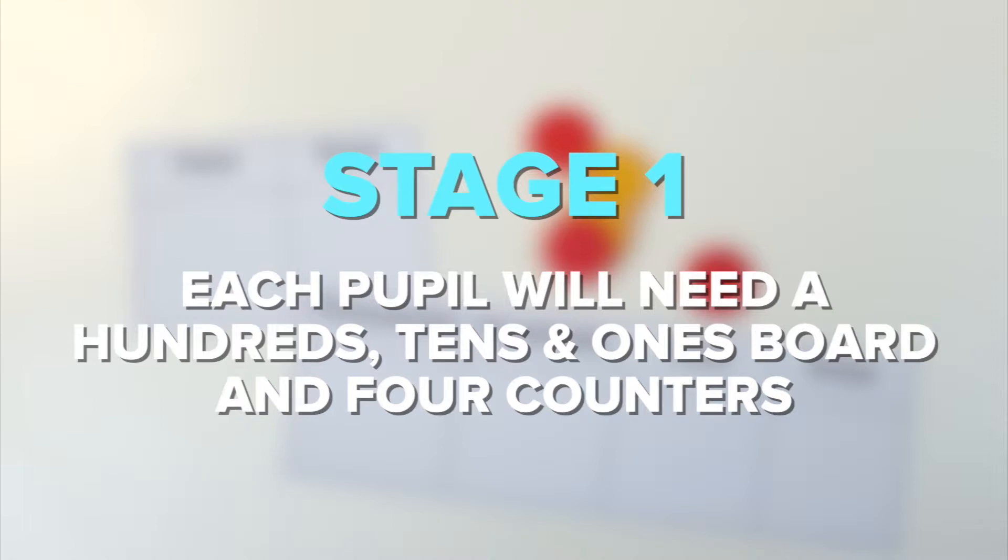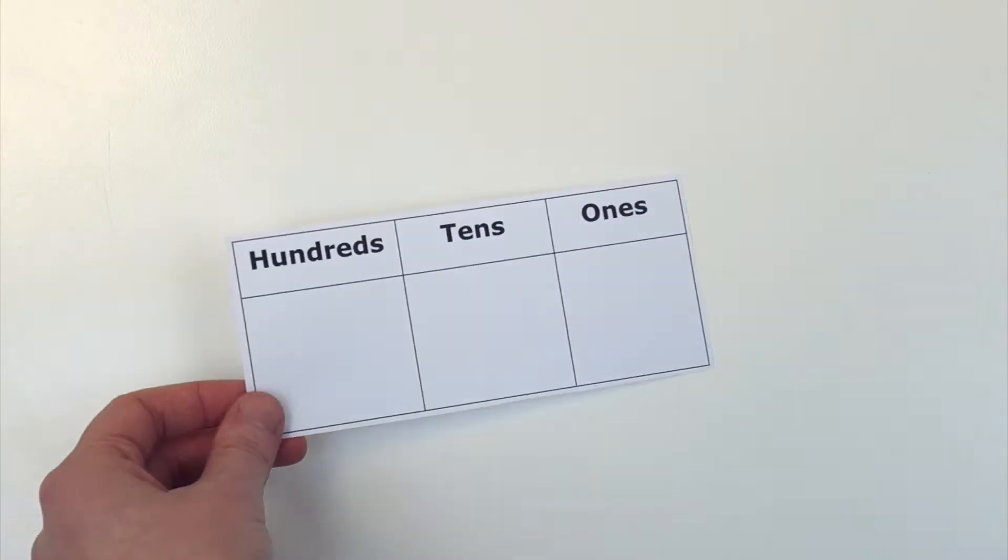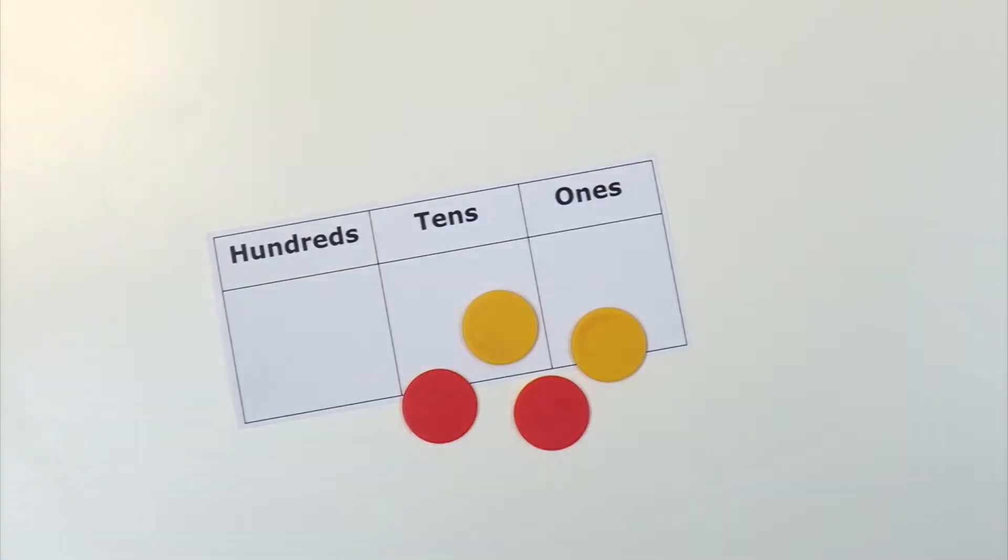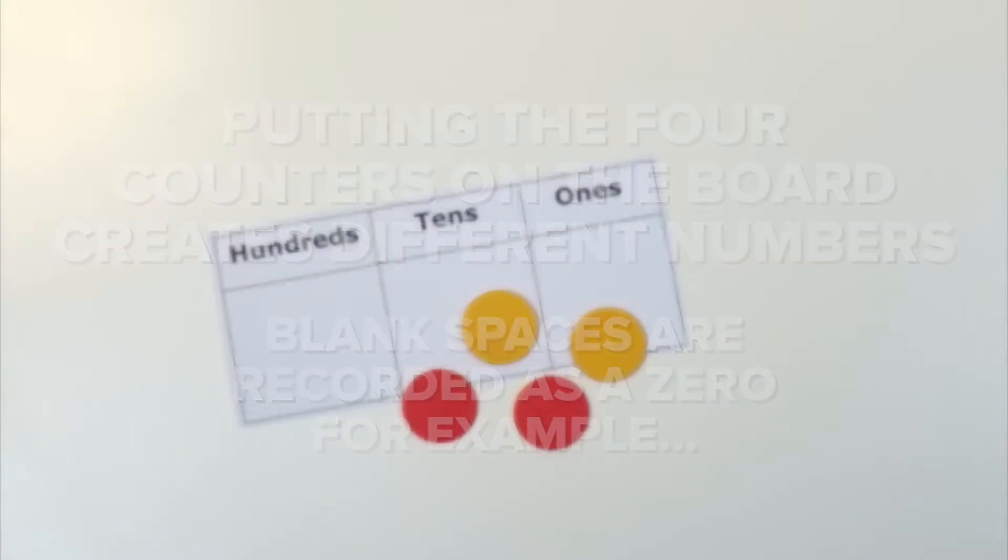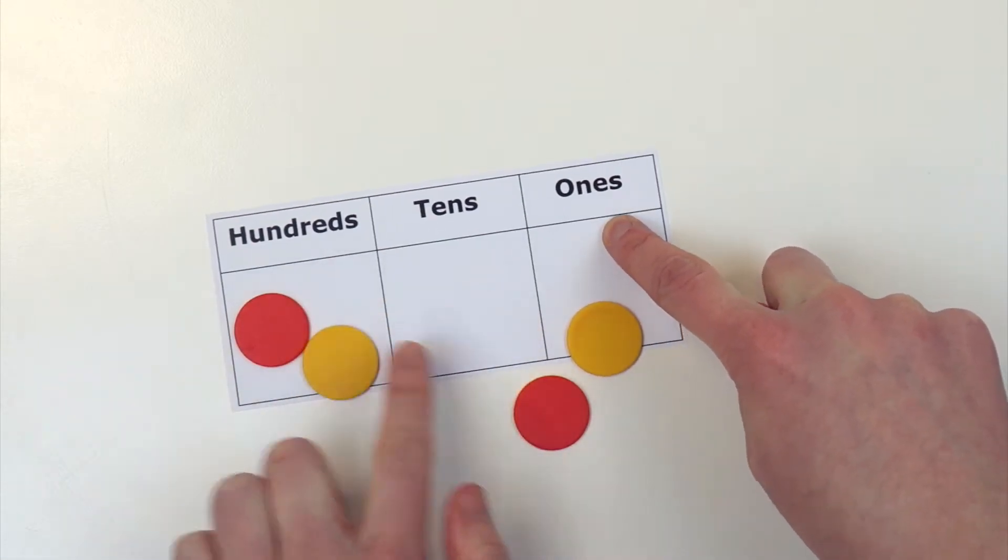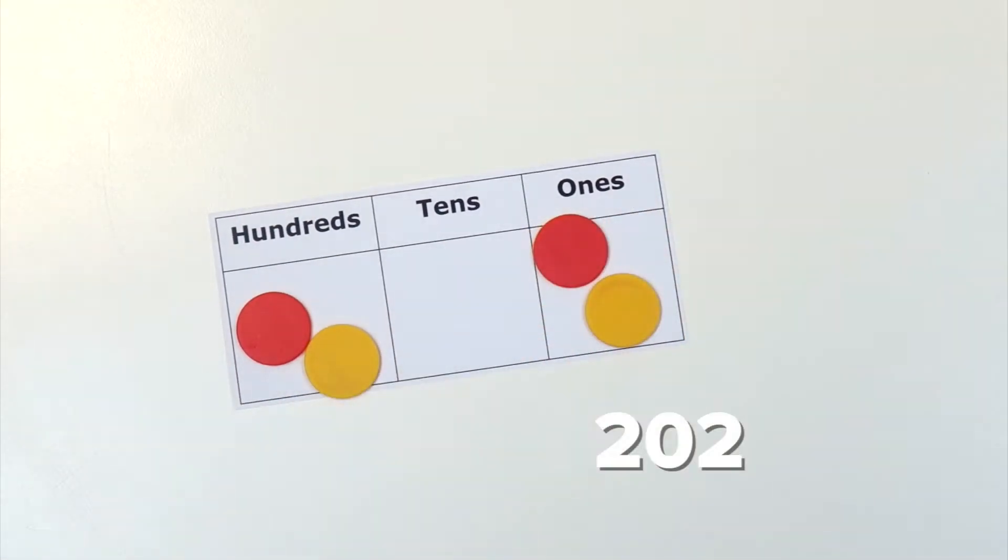Each pupil will need a hundreds, tens and ones board, and four counters. Putting the four counters on the board creates different numbers, with blank spaces recorded as zero. For example, 202, 121.